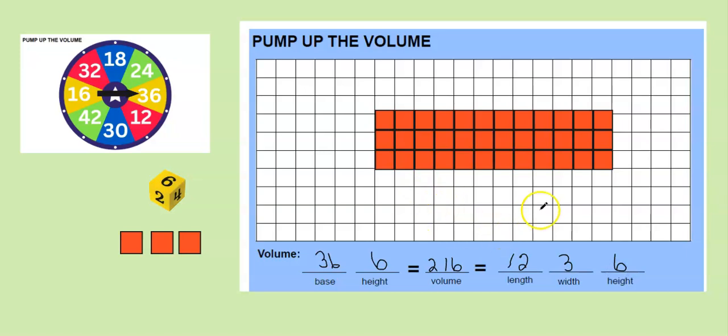Some other student might have had a 6 by 6 shape, because factors of 36 are 6 and 6, so they could have had a shape like that. I want them to figure out different ways they can make their base while still having a volume of 216.